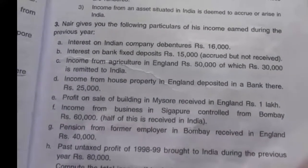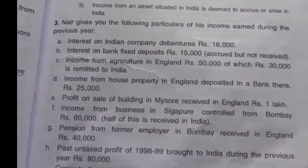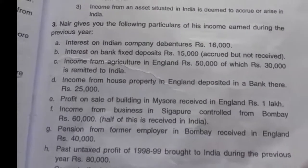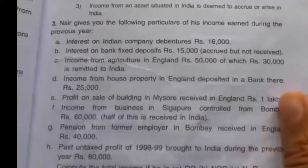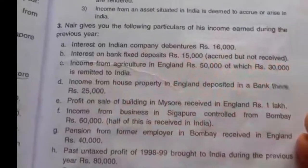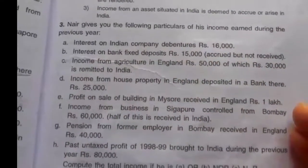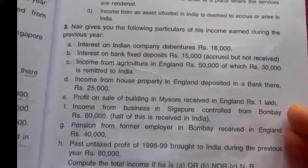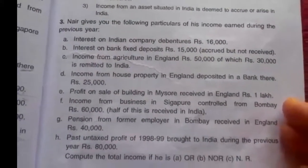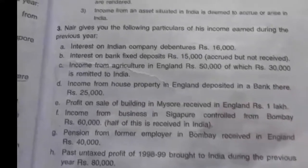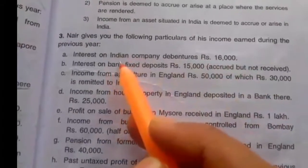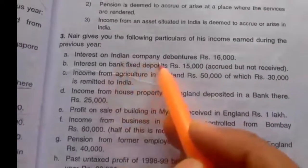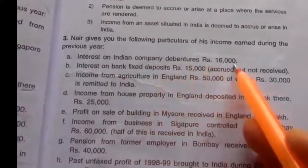We have to compute the total income in three cases: ordinarily resident, not ordinarily resident, and non-resident. Let's see which income is taxable in the hands of each. The first item is interest on Indian company debenture.